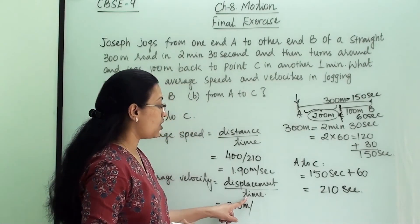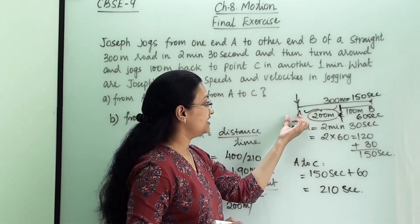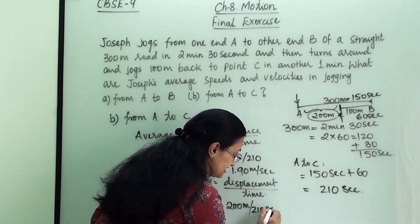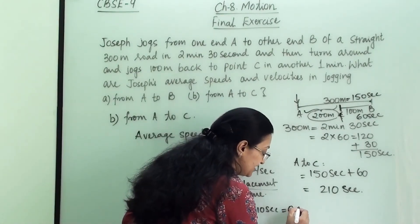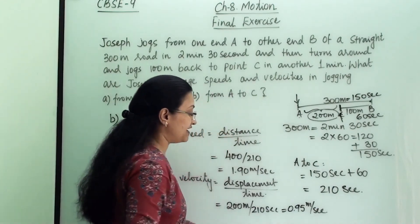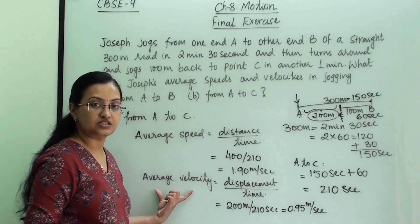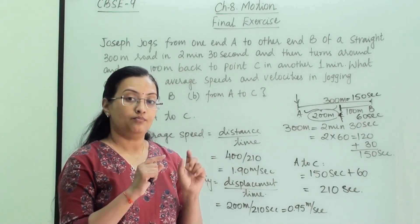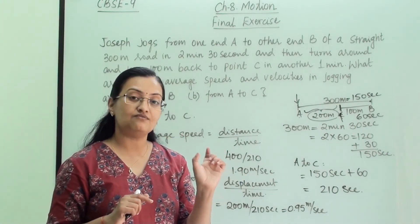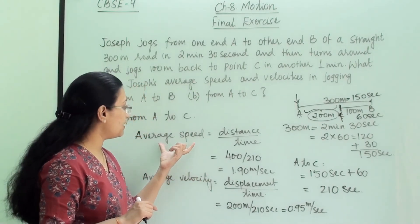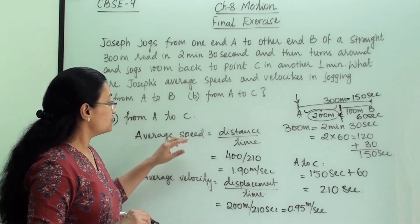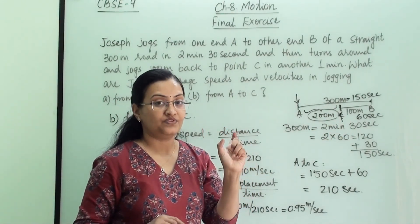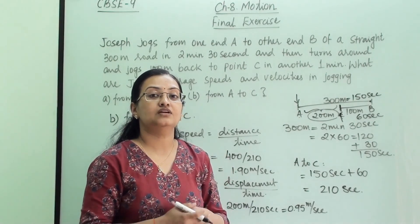The displacement is 200 meters. The total time for A to B and then B to C is 210 seconds. So average velocity = 200 ÷ 210 = 0.95 meters per second. That is the average velocity for the A to C patch. In summary, we found average speed and velocity for A to B, and similarly for A to C. The key difference is correctly identifying displacement and calculating the total time from start to finish.